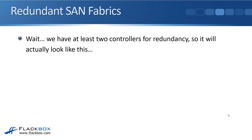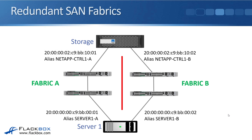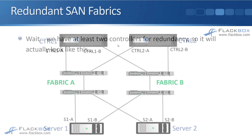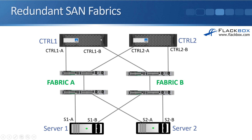In the previous slide, there's a single point of failure — the storage system controller. We don't want a single controller; we're going to want redundancy there as well. So we're going to have at least two controllers. Controller 1 is connected to both Fabric A and Fabric B, and Controller 2 is also connected to Fabric A and Fabric B. Controller 1 and Controller 2 are part of the same storage system and they provide redundancy for each other.